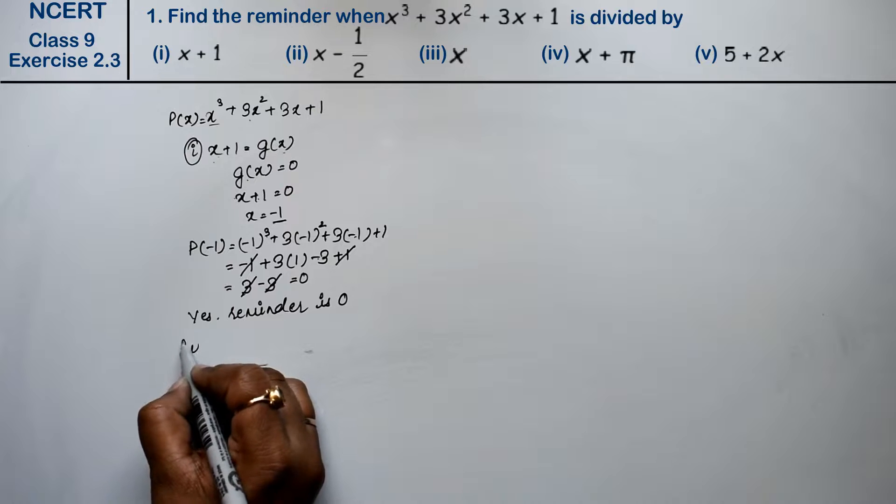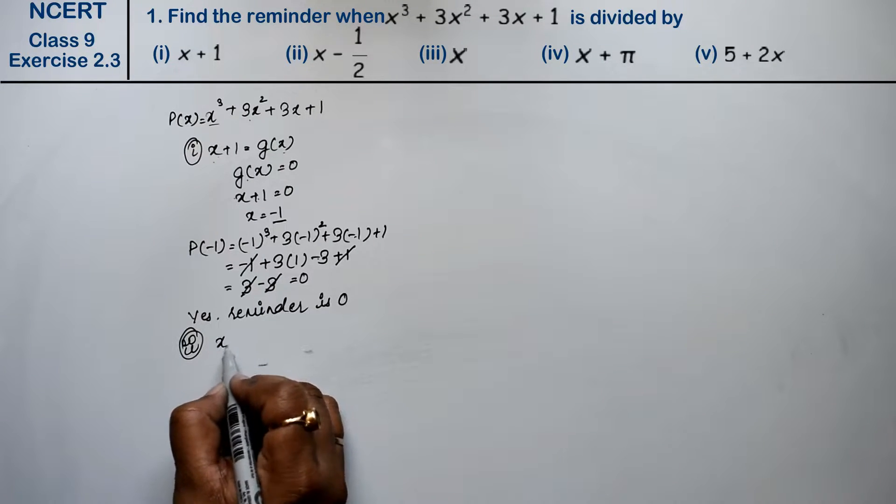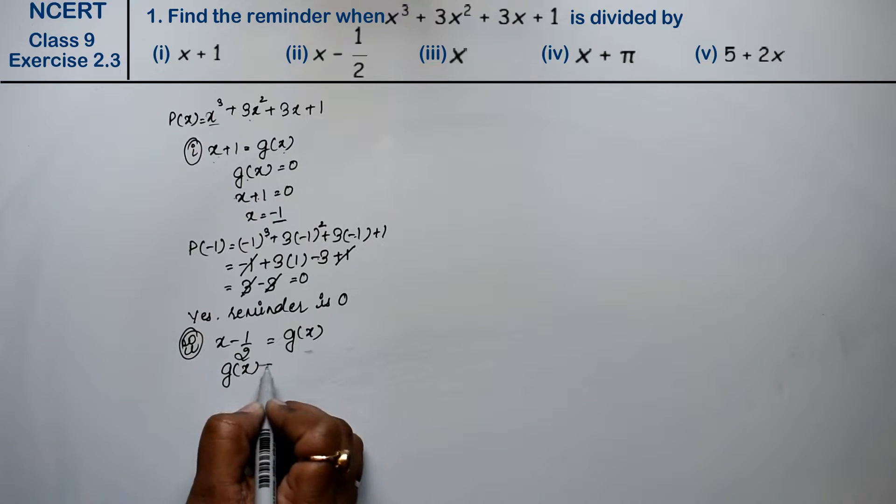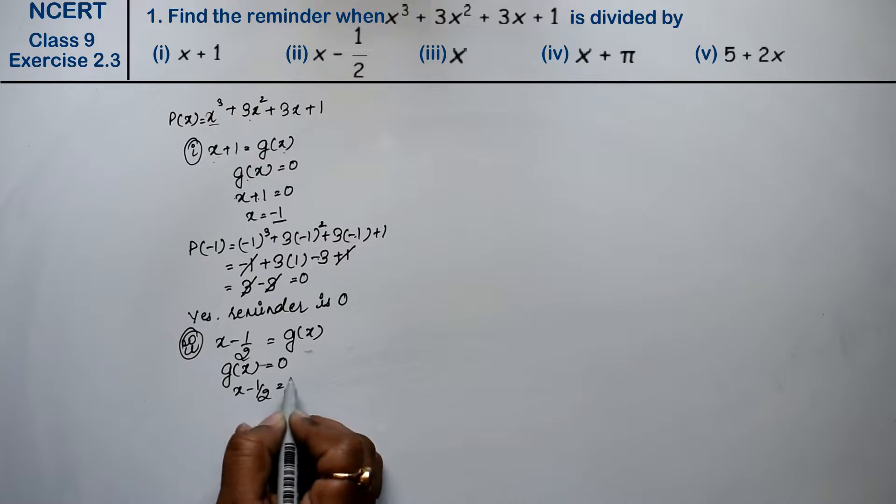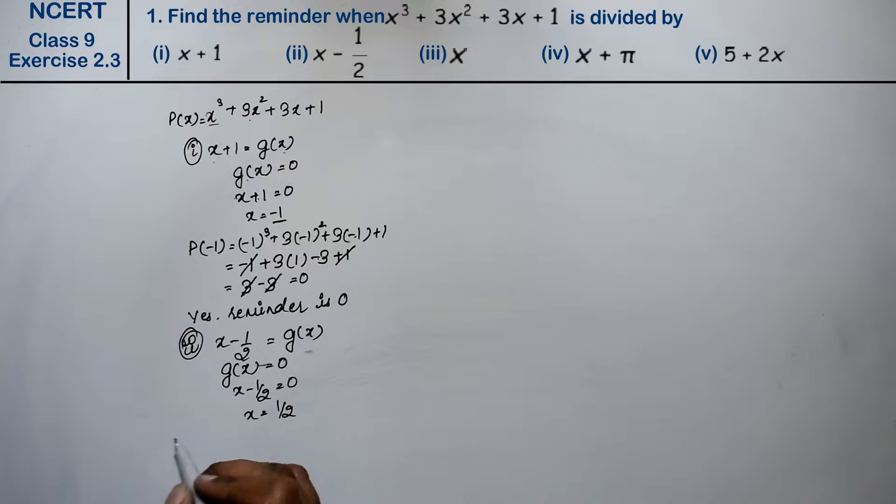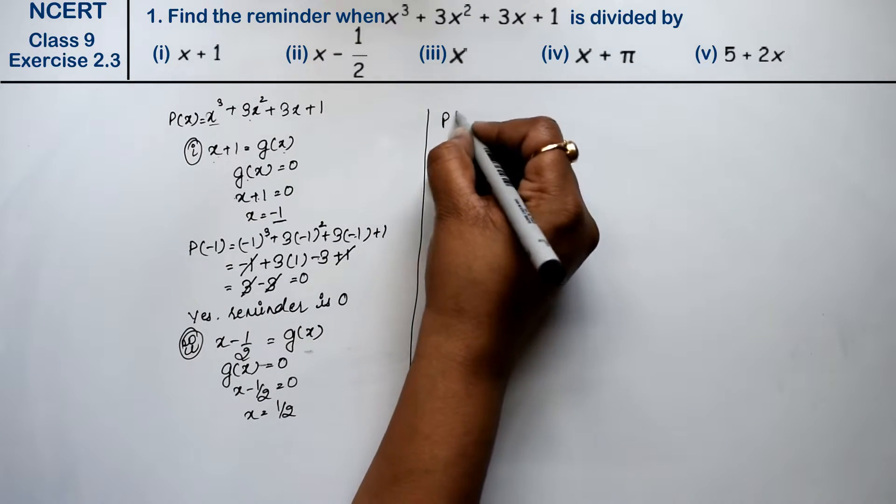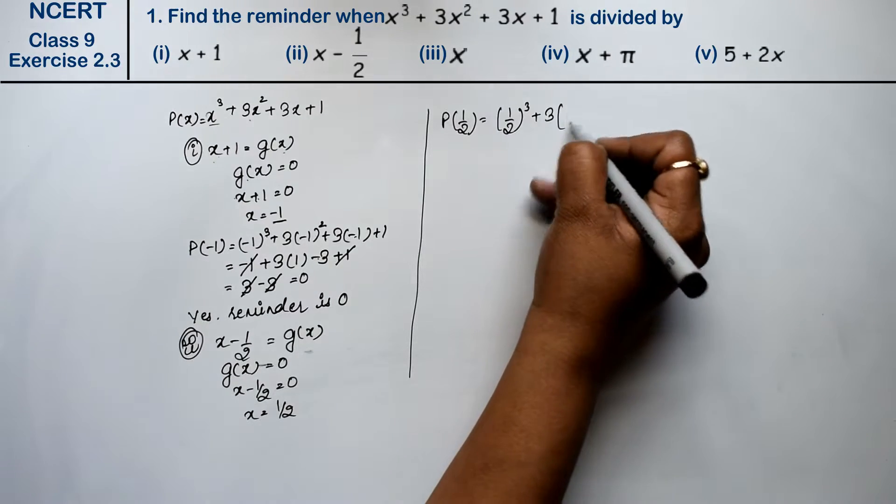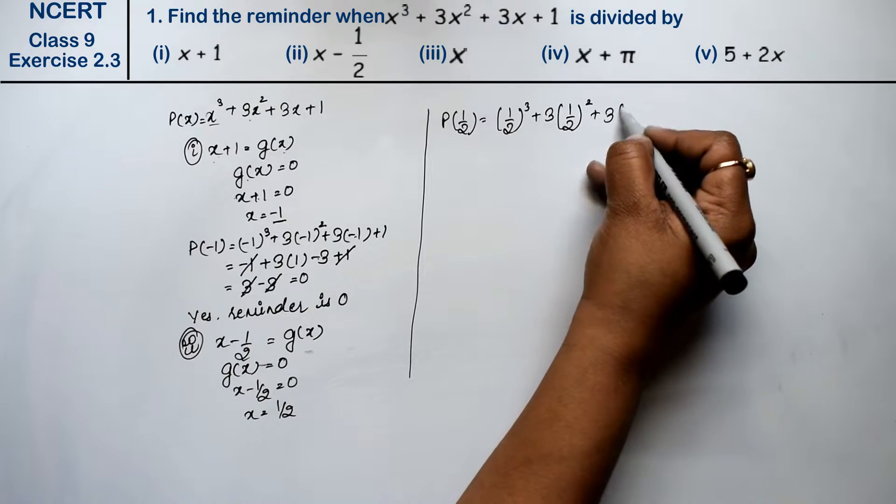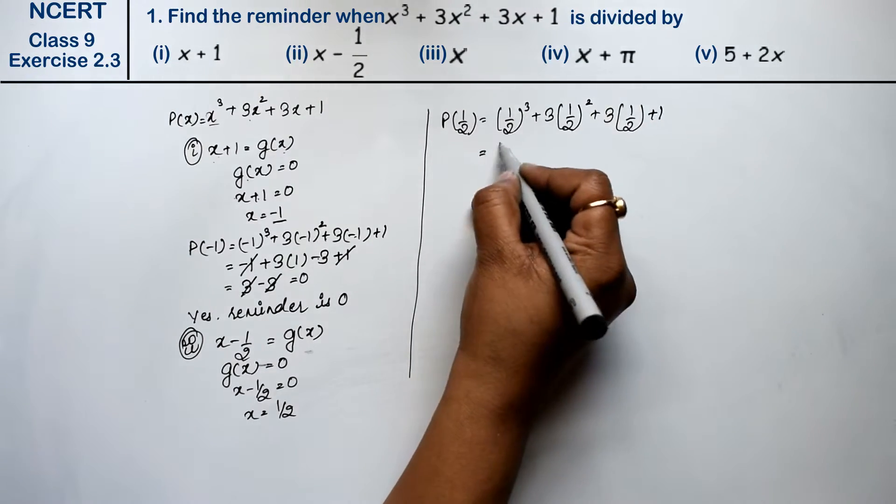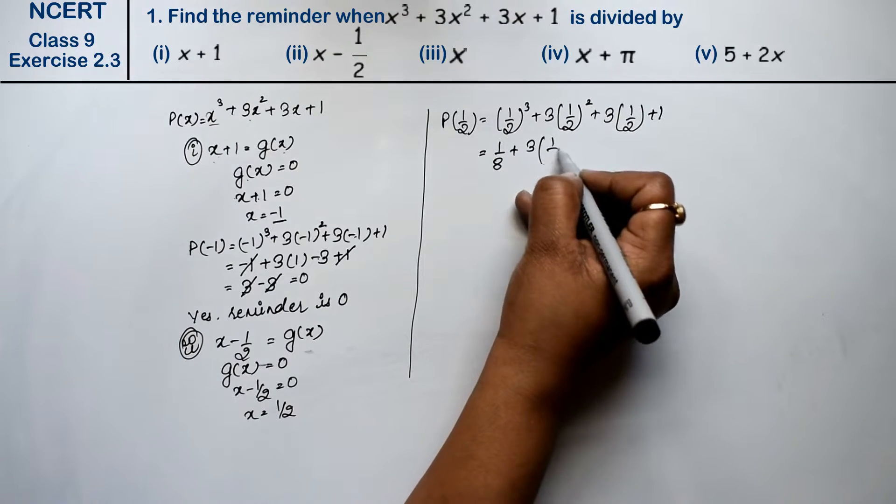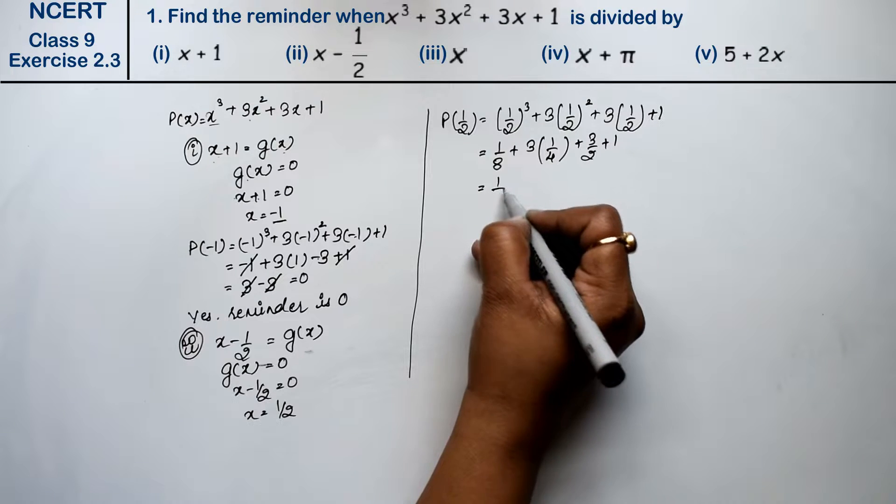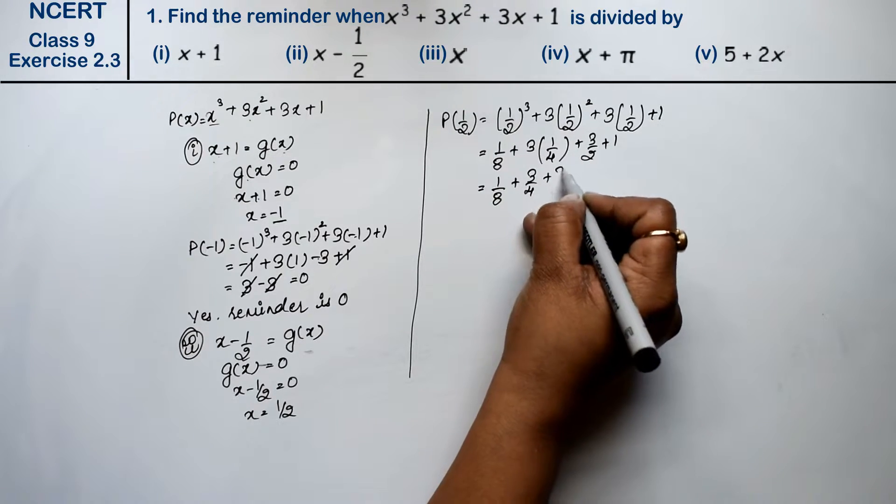Let's do second part. Second part is x minus 1 upon 2 equal to g(x). We call g(x) equals to 0 again, then x minus half equals to zero, x value is 1 upon 2. Then p(x) equals 1 upon 8 plus 3 into 1 upon 4 plus 3 upon 2 plus 1.